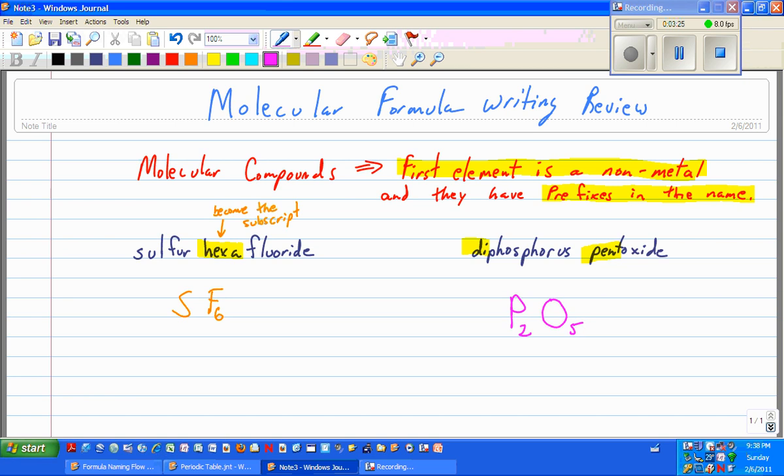And we're done. Much easier for molecular formula writing than it is for ionic. A few more steps for ionic. Just remember there's a difference between the two. We're looking at the first element in both cases. First element for ionic is metal. First element for molecular is a nonmetal.